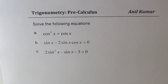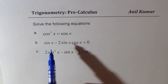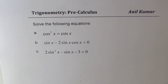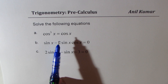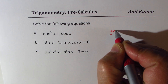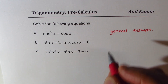I'm Anil Kumar. Let me thank my subscribers for taking keen interest in my videos and posting excellent questions. Here are three trigonometric equations which we are going to solve. The three equations are: cos³x = cos x; sin x − 2sin x cos x = 0; and 2sin²x − sin x − 3 = 0. Since no domain restriction is given, all our answers should be general answers, as these functions are periodic.